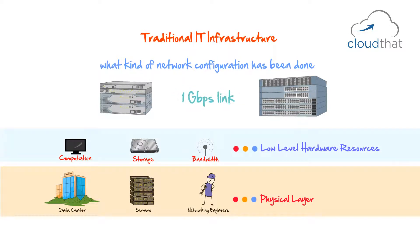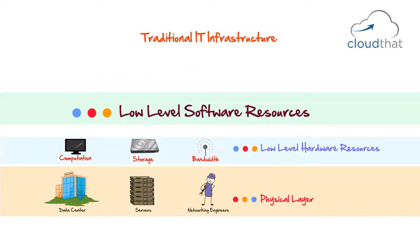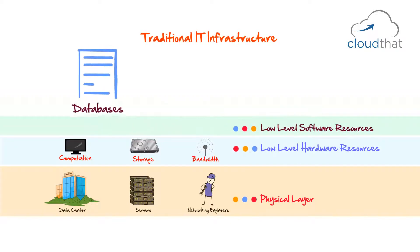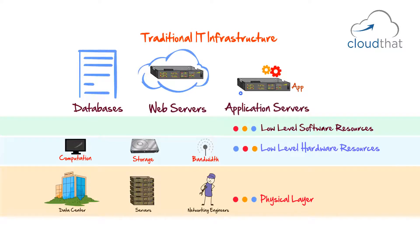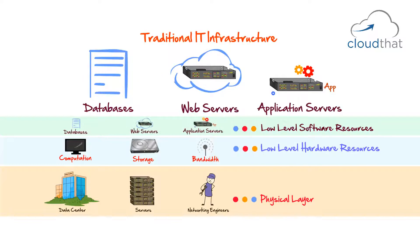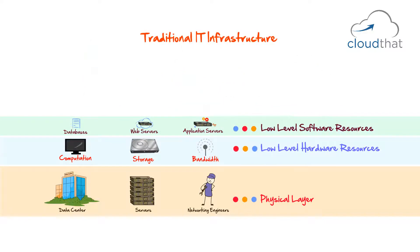Low level hardware resources allow you to deploy low level software resources on top of it. These are software resources deployed to be used by higher layers, but we generally don't use this software directly. For example, databases — we don't use databases directly; they are almost always used in conjunction with some application. Similarly with web servers and application servers — they are there to support the applications but are rarely used directly. Most developers and testers think in terms of low level software resources and above; they don't really care about the lower levels unless there is a problem.